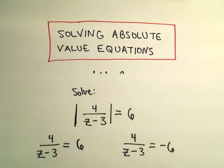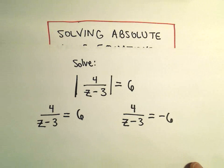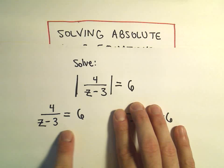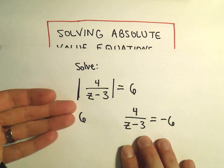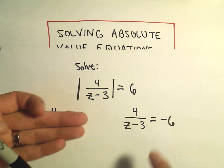So to begin with here, we've got the absolute value of 4 over z minus 3 equals 6. What I've done is I've just rewritten the equation without the absolute value. I've got to solve that. And then I rewrote the equation where I simply replace the number on the right, I make it a negative.